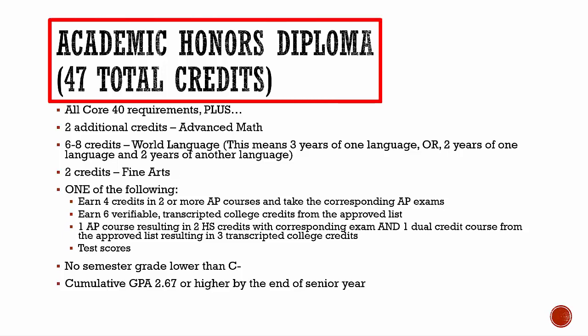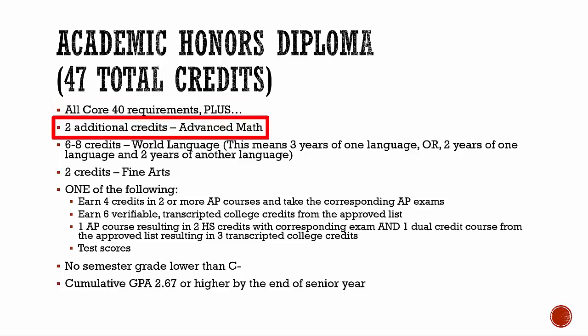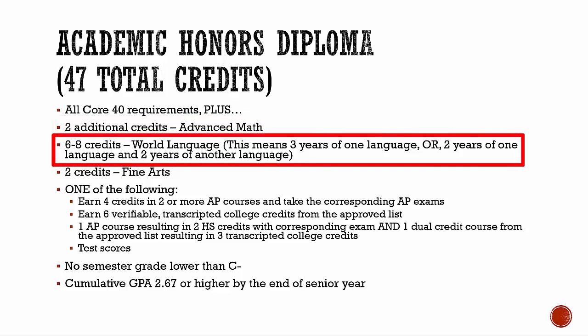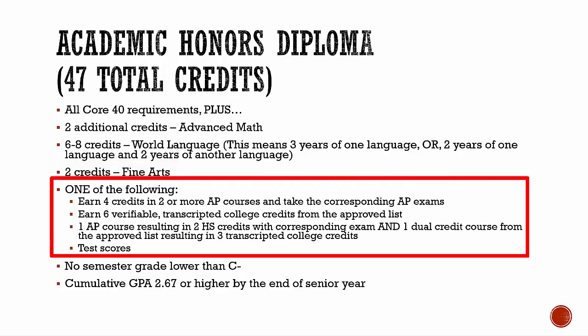If you are on track to earn an Academic Honors diploma, you must earn 47 total credits, and all semester grades need to be a C- or higher. You must complete all Core 40 diploma requirements, plus two additional math credits for a total of eight, six to eight world language credits — meaning three years of one language, or two years of one and two years of another — and two fine arts credits. You also need four credits in two or more AP courses and take the AP exam, or earn six college credits from dual credit classes, or earn two credits in an AP course and three college credits from dual credit courses. You can also meet this requirement by receiving certain scores on your SAT or ACT.